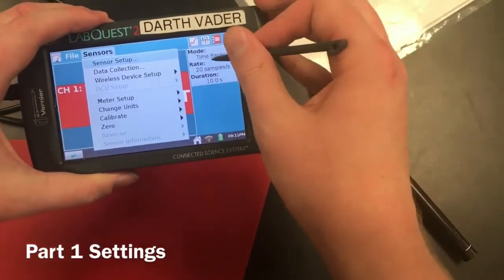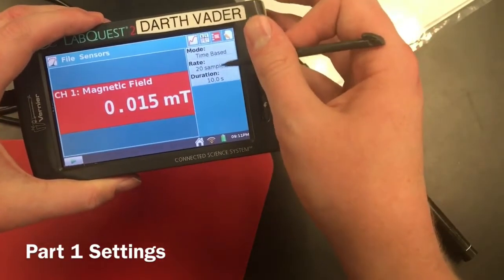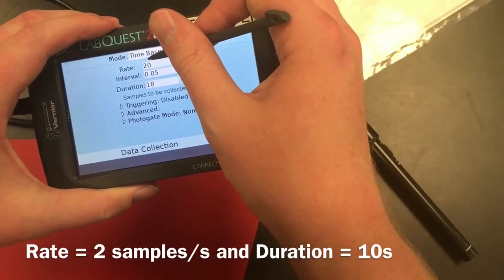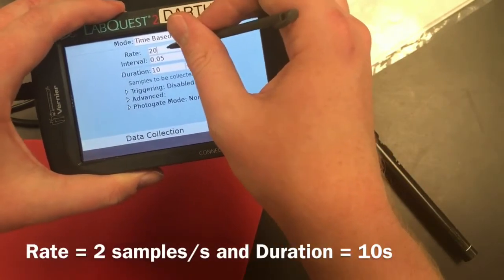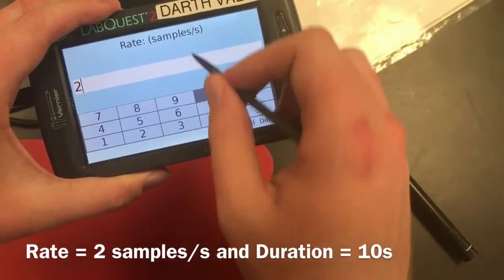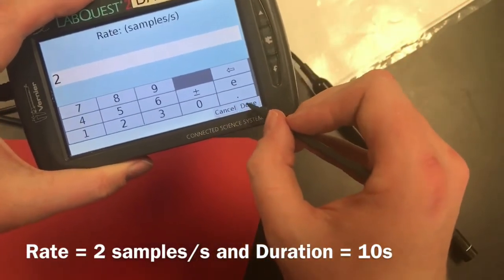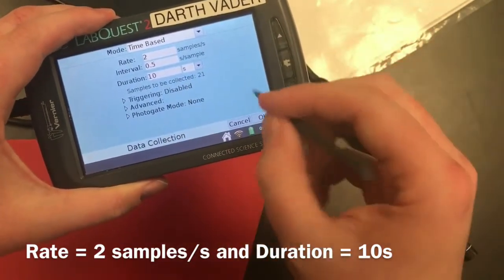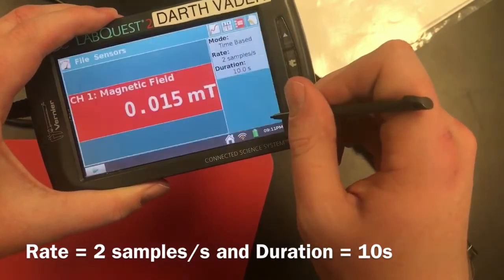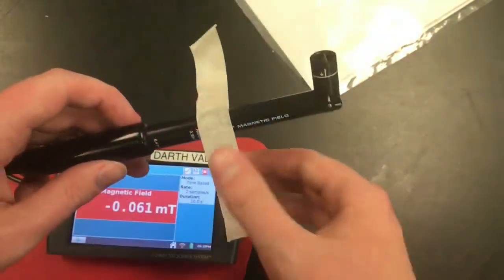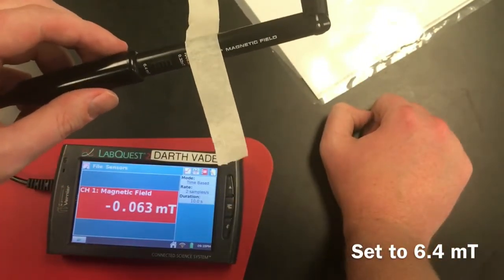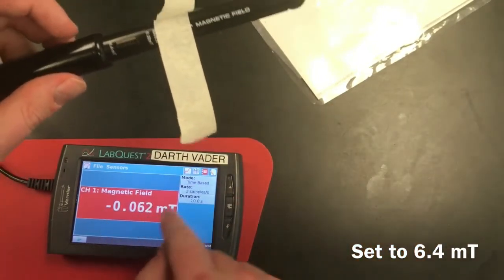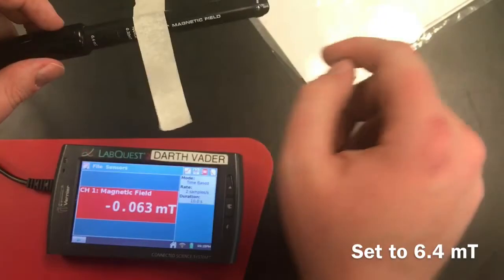Once you've connected the probe, I'm gonna set up our settings here. Click in our settings. Our rate is going to be two samples per second, and our duration we're actually going to leave the same, so our duration for this is going to be 10 seconds. Hit okay. You want to make sure that your magnetic sensor is down at 6.4, so that'll read three decimal places on here, 6.4 for this first procedure.